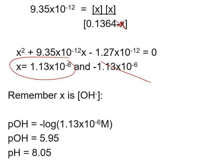Remember that x represents the OH⁻ concentration, not H⁺. Taking the negative log gives the pOH, not the pH directly. Convert to find the pH = 8.05. This confirms that at the equivalence point for a weak acid–strong base titration, the pH is above 7.